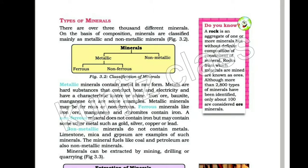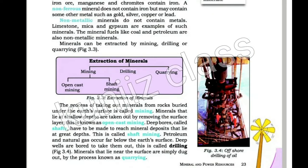Non-metallic minerals do not contain metals. Limestone, mica and gypsum are examples of such minerals. The mineral fuels like coal and petroleum are also non-metallic minerals.